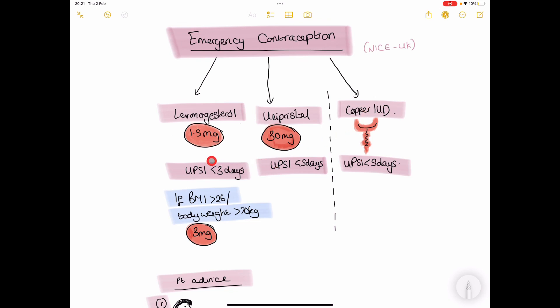Orally, we can give a stat dose of 1.5 mg levonorgestrel. If the patient's weight is above 70 kg or BMI more than 26, we just double the dose to 3 mg.